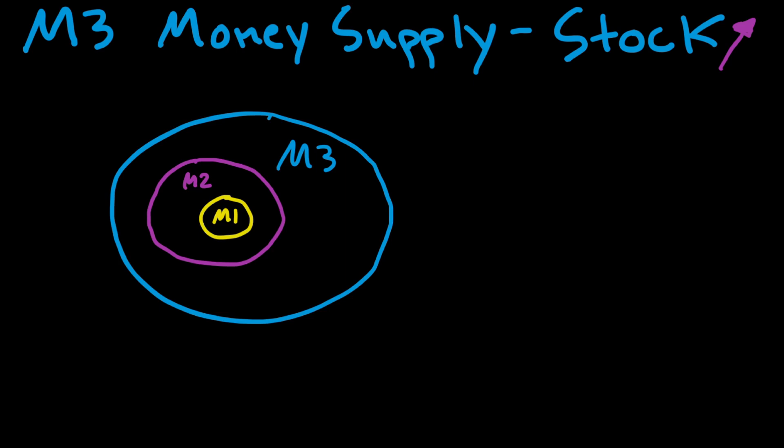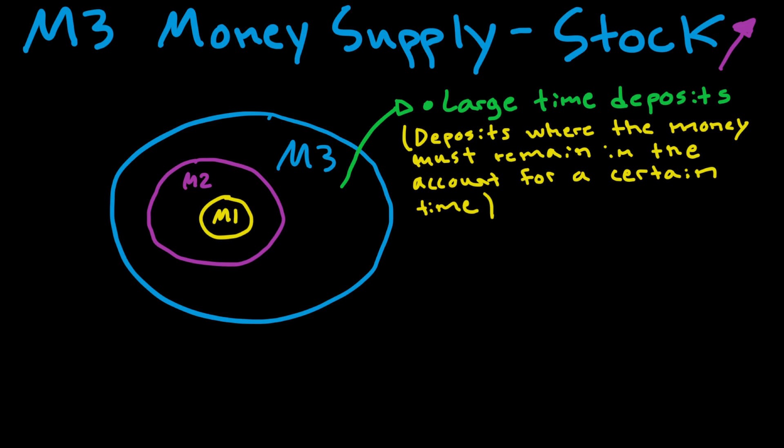But what are the new components for M3? The types of M3 money that we don't have in M2 and M1—well, the M3 money includes first of all large time deposits. These are basically deposits where the money must remain in the account for a certain time in order to earn the agreed interest on the money.